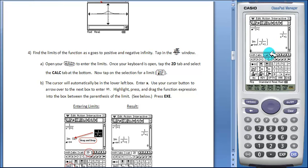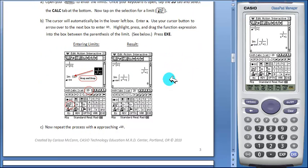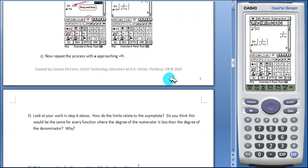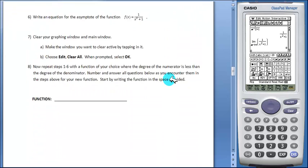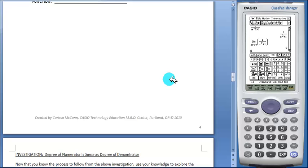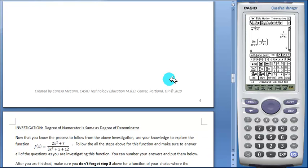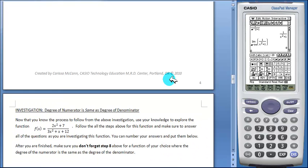Press EXE and students will repeat this process for X approaching negative infinity as well. Students will then answer some questions about the results they obtained. The worksheet then leads students through a series of activities and questions similar to the first investigation.